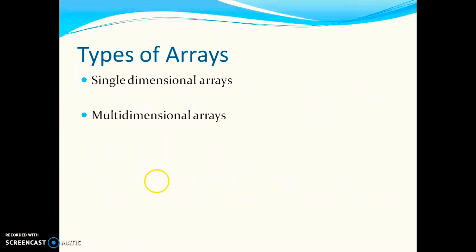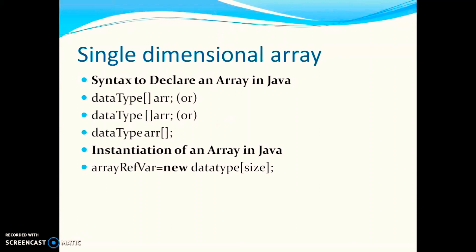You can see here there are two types of Arrays: single dimensional Array and multidimensional Array. First, we will see the syntax for single dimensional Array. The syntax to declare Array in Java is data type then square bracket and ArrayName, or data type and ArrayName with square brackets. Instantiation of an array in Java is done with array reference variable equal to new data type size. The new operator is used to assign values.